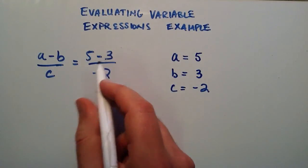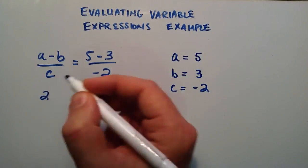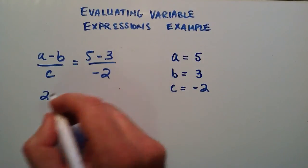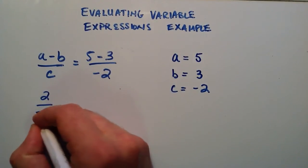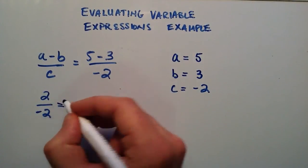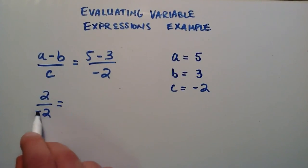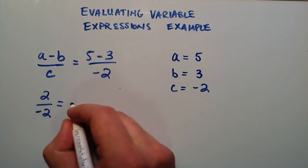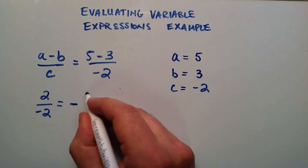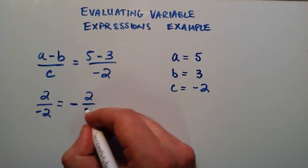And we have 5 minus 3 is positive 2. And then we're dividing that by negative 2. From a few tutorials ago I explained that if you have a negative in the denominator you can simply move that out front. So we're going to do that. We're going to write the negative out front and this becomes negative 2 over 2.